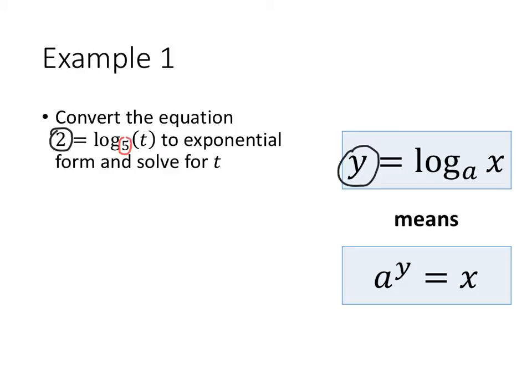The 5 is the base of the logarithm, so that's my a. And then the x is the t that's inside the logarithm. So when I rewrite this equation, what I get is a to the y equals x. So 5 to the 2 equals t.